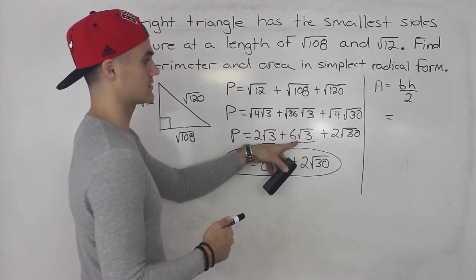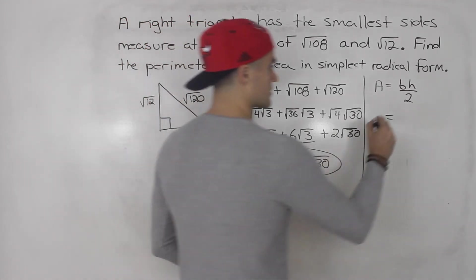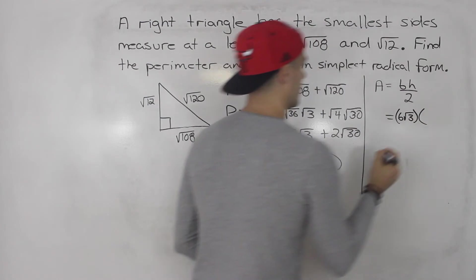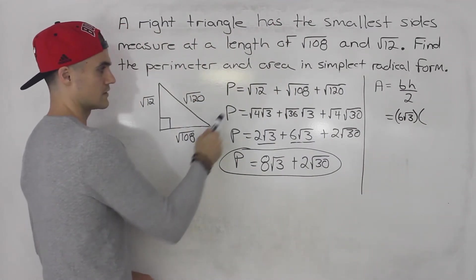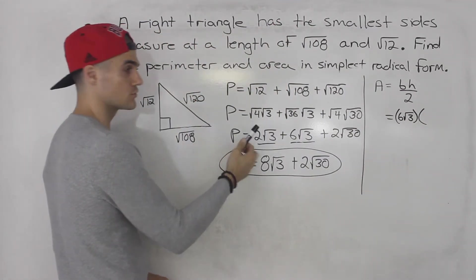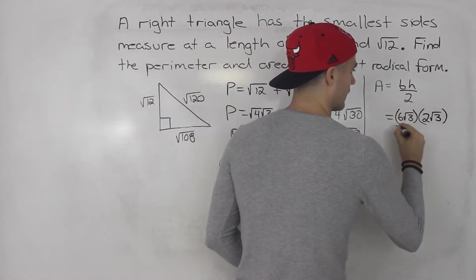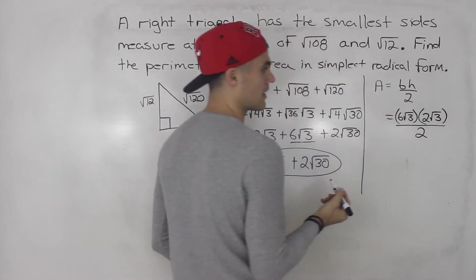So instead of putting root 108, I'm going to put 6 root 3. And then the height is this root 12. Instead of putting root 12, I'm going to put 2 root 3. And then we're going to be dividing by 2.